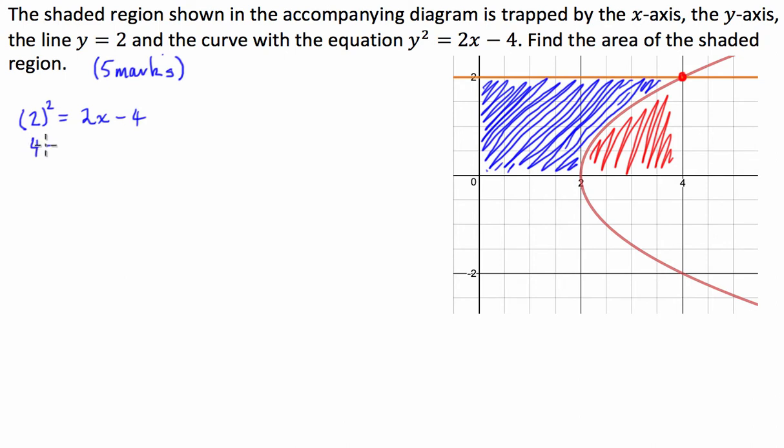We've got 4 equals 2x take 4. Take the 4 across, we have 8 divided by 2, x is equal to 4. Cool. So, we've just verified that that point there is going to be 4 comma 2.